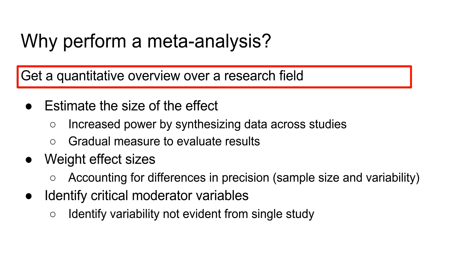The above example illustrates that meta-analysis is a useful tool to get a quantitative overview of a field. We can estimate the average of the true effect size, which is a more precise measure than can be provided by individual studies. In addition, effect sizes provide us with a gradual measure to evaluate results, as opposed to the yes-or-no imposed by p-values. We can also weight individual effect sizes according to their precision, going beyond a yes-no description of effects as in a qualitative review. Finally, we can identify which moderator variables explain part of the heterogeneity between effect sizes, something that can often not be deduced from a single study.